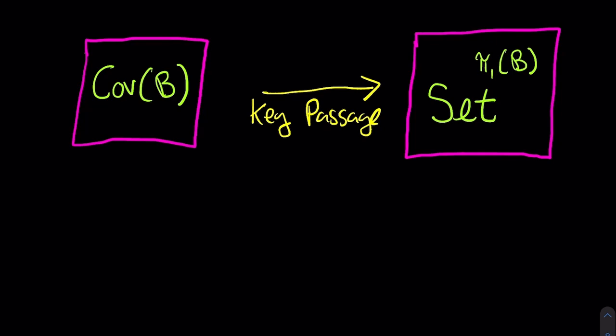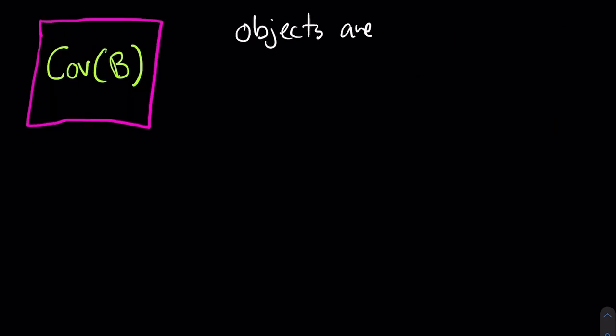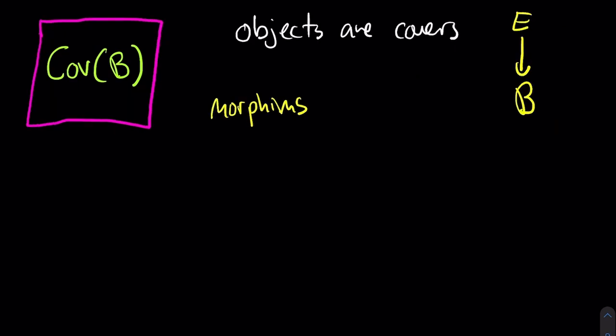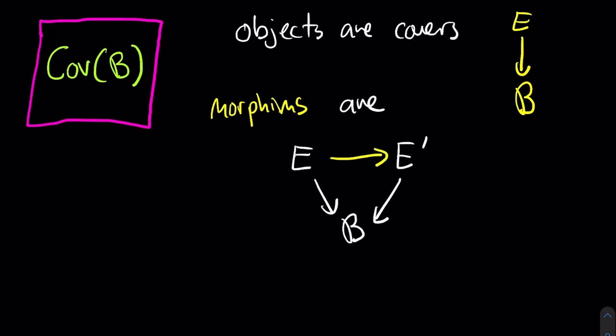To explain this passage, let me describe the category of covers of B. The objects are covering spaces E over B. The morphisms from a cover E over B to E prime over B are continuous maps from E to E prime that are compatible with the projections down to B.